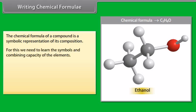A group of atoms carrying a charge is known as polyatomic ion. Example, nitrate ion.